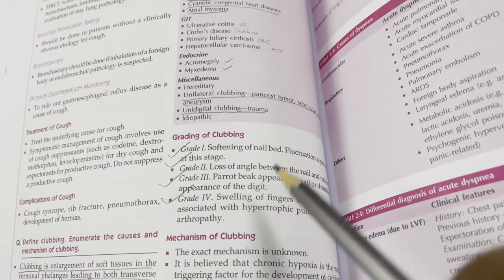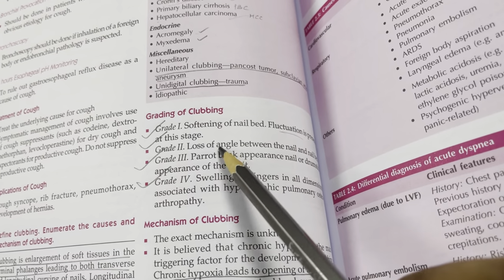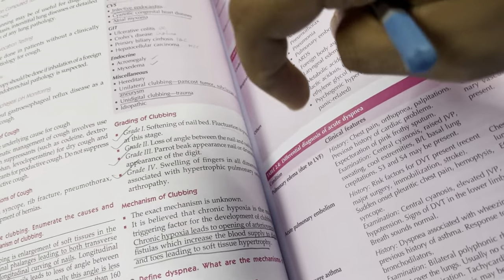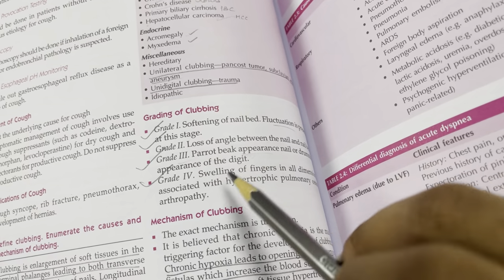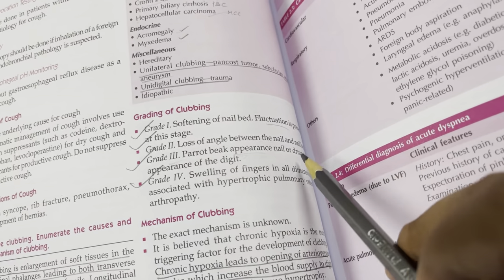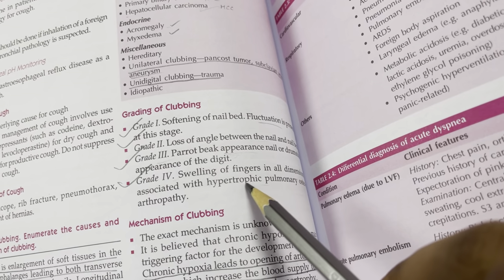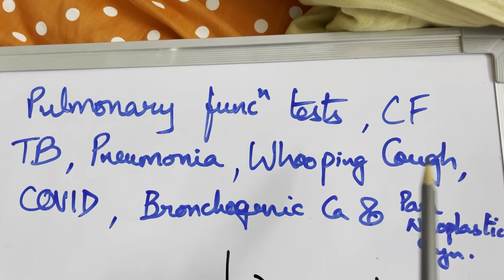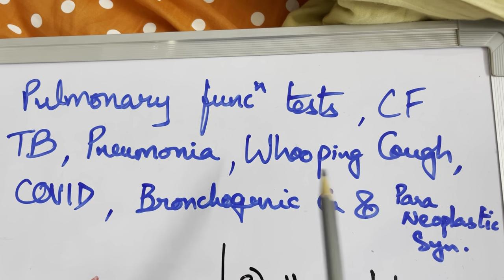Grades of clubbing: grade 1 — softening of nail bed with fluctuation; grade 2 — loss of hyponychial angle (Schamroth sign); grade 3 — parrot beak or drumstick appearance; grade 4 — swelling of fingers in all dimensions associated with hypertrophic pulmonary osteoarthropathy.